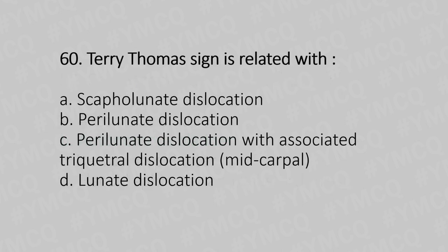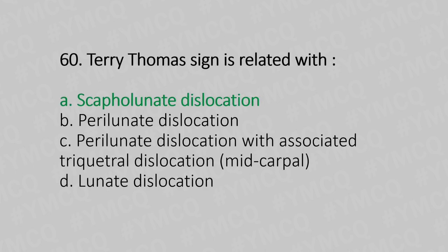Question 60: Terry Thomas sign is related with — Option A: scapholunate dislocation, Option B: perilunate dislocation, Option C: perilunate dislocation with associated triquetral dislocation mid-carpal, Option D: lunate dislocation. The answer is Option A, scapholunate dislocation.